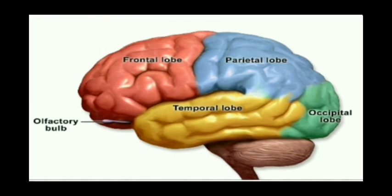The third is the Parietal lobe. The Parietal lobe has a function: if you know any object, you can understand it. If the parietal lobe is damaged, it is a disorder. For example, if you look at a pencil or a star shape, you can recognize it. That is why the Parietal lobe function is sensation.